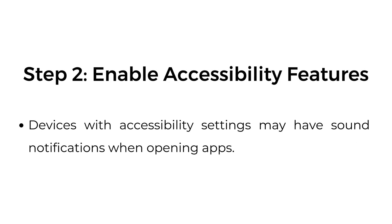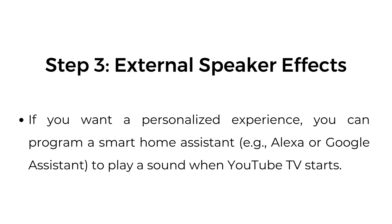Step 2: Enable Accessibility Features. Devices with accessibility settings may have sound notifications when opening apps. Step 3: External Speaker Effects. If you want a personalized experience, you can program a Smart Home Assistant — Alexa or Google Assistant — to play a sound when YouTube TV starts.